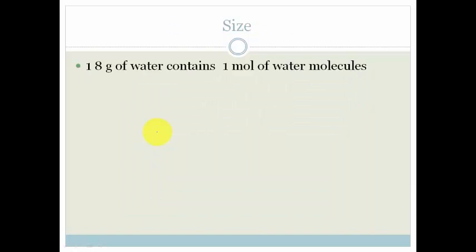So what does that mean to us? Well, first of all, let's get an idea of the size. 18 grams of water contains 1 mole of water molecules. In other words, if we have a container and we have 18 grams of water, that means that we've got 1 mole of water molecules, which means we've got 6.02 times 10 to the 23 water molecules. I know that you know about Avogadro's constant, but let's just give you an idea again.